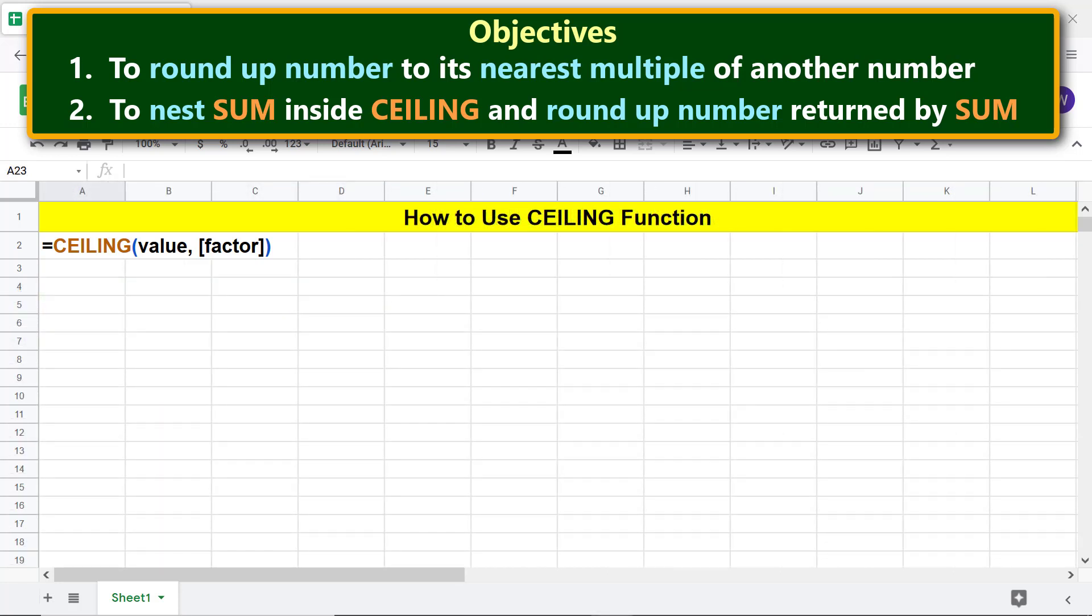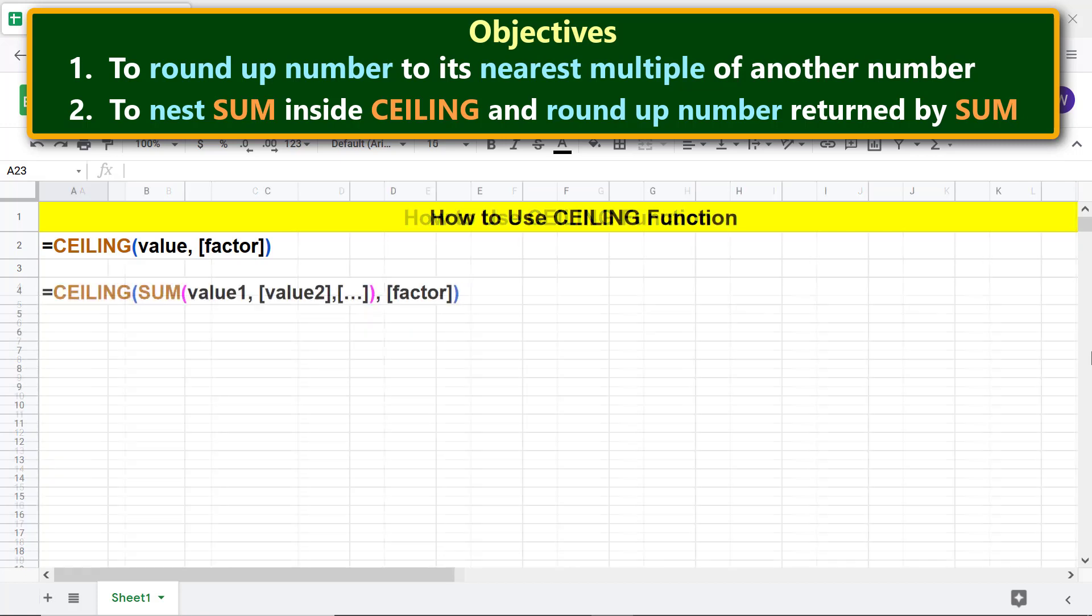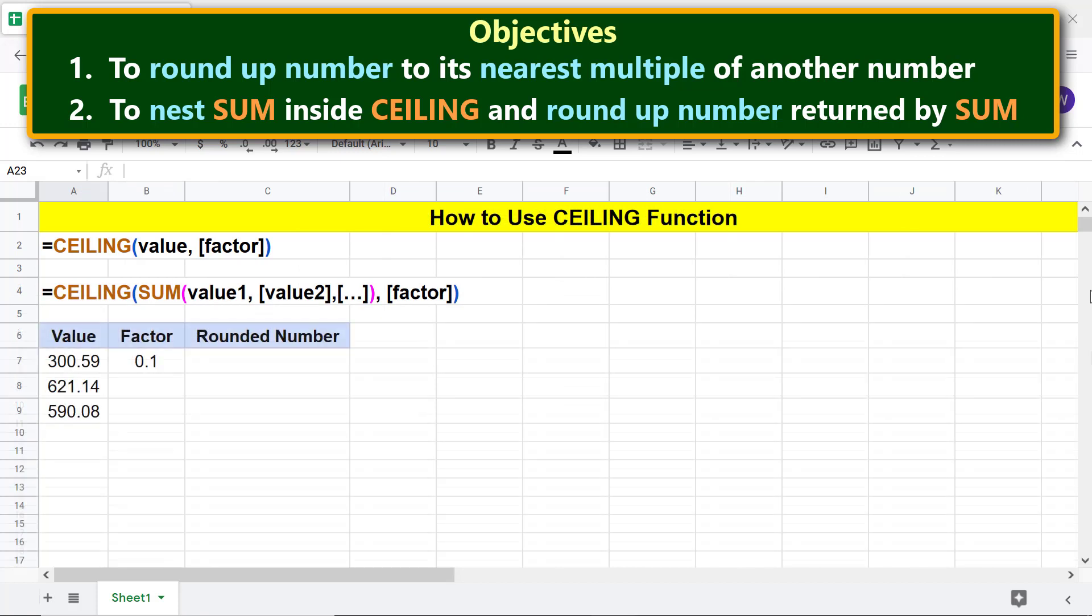Now let's work on the second objective. For this objective, here is the CEILING-SUM functions combo formula. This is the data I will use to work on the second objective.